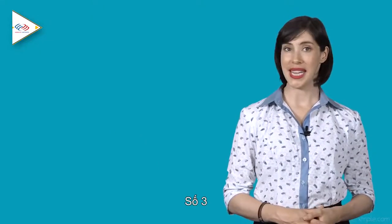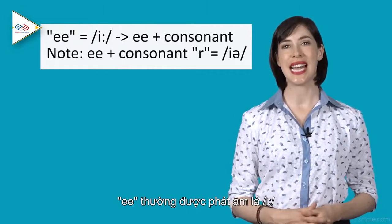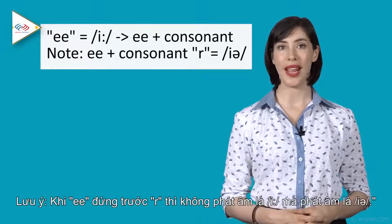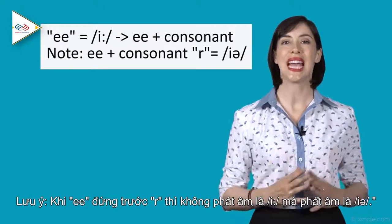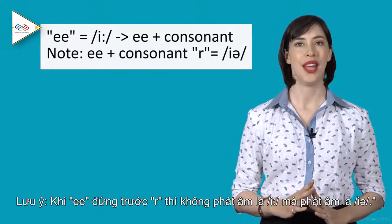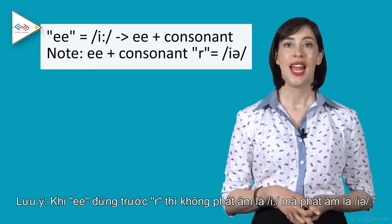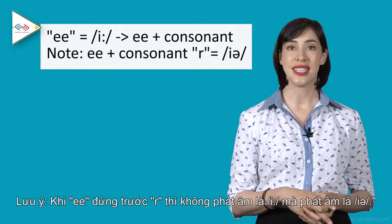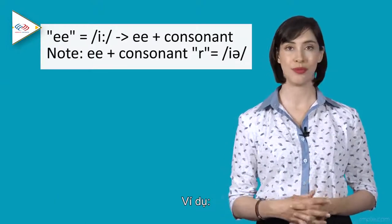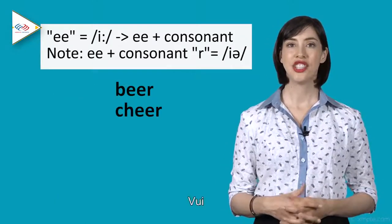Number three: EE is pronounced as a long E, but when EE comes before the R sound at the end of the word, it will be pronounced as IE. For example: beer, cheer.